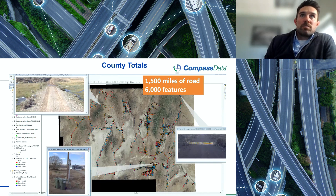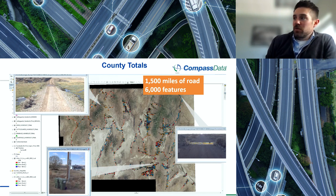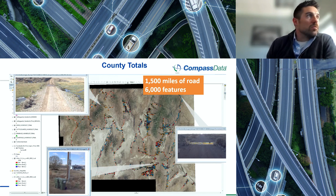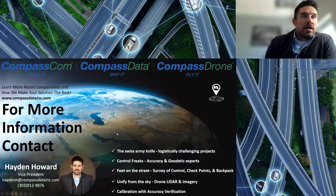In this county, we mapped 1,500 miles of road and 6,000 features in a very rural location, bringing a lot of value into the management of all their assets for this county that they had not had previously. And that's my base map example. Thank you very much for your time, everyone.